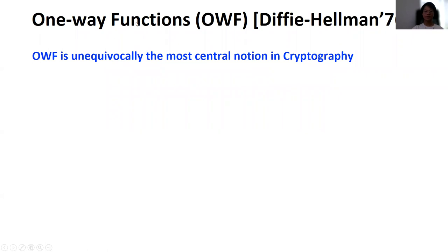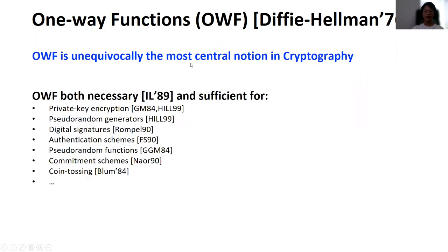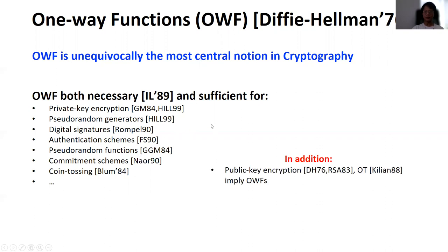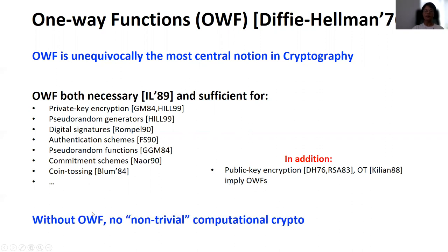Today we are going to talk about the notion of one-way functions, which was proposed by Diffie and Hellman in 1976. One-way functions are unequivocally the most central notion in cryptography. It is well known that one-way functions are both necessary and sufficient for a branch of private key crypto primitives such as private key encryption, pseudorandom generators, digital signatures, and so on. We also know that public key encryption and oblivious transfer would imply the existence of one-way functions. So without one-way functions, there is really no non-trivial computational cryptography.